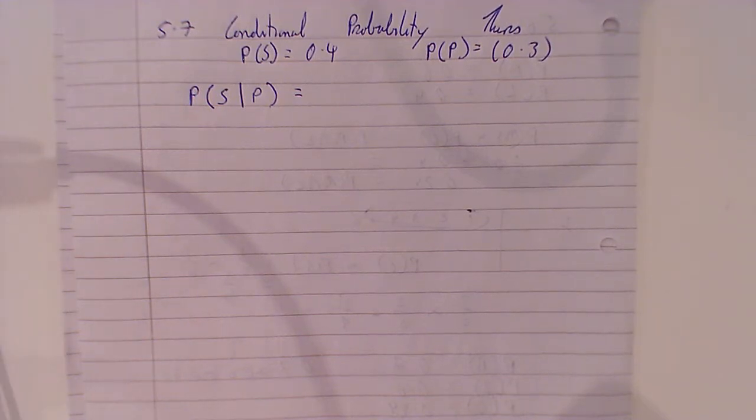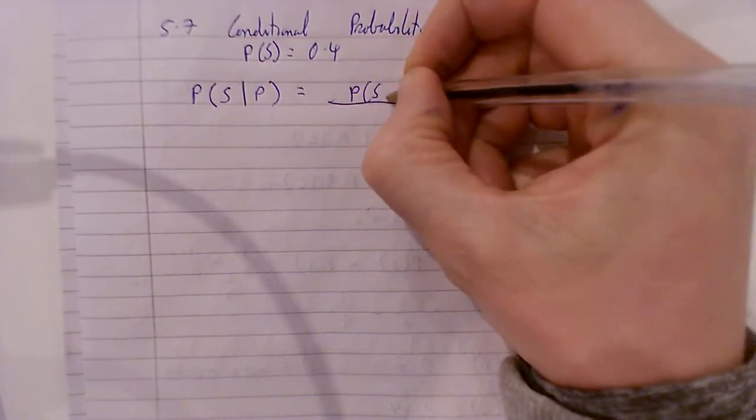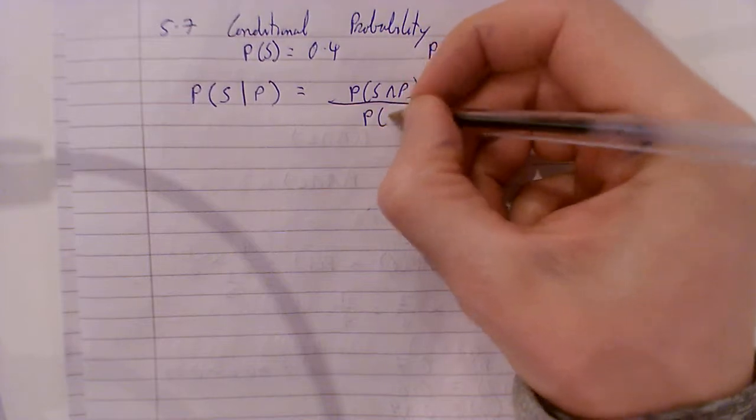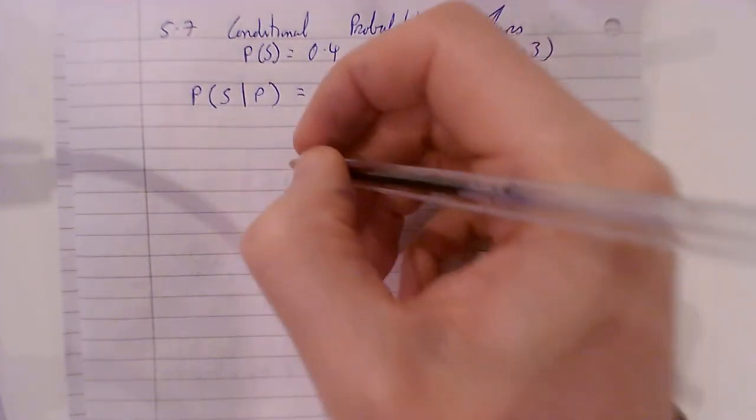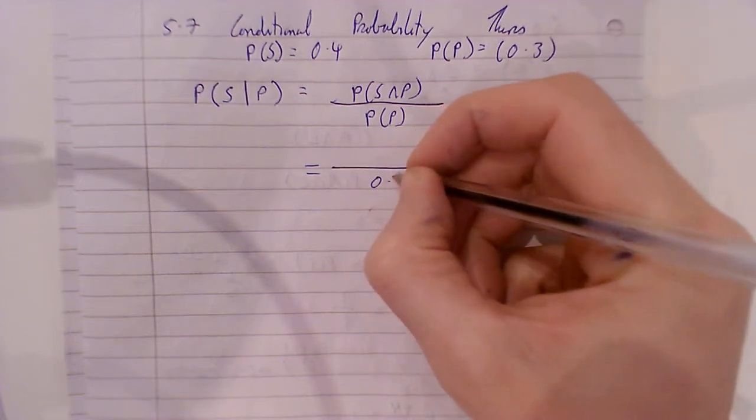There's a formula for this. It's P(S∩P) over P(P), okay? So the probability of P is 0.3.